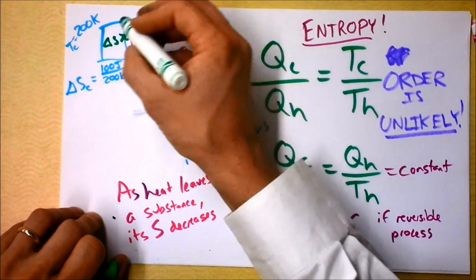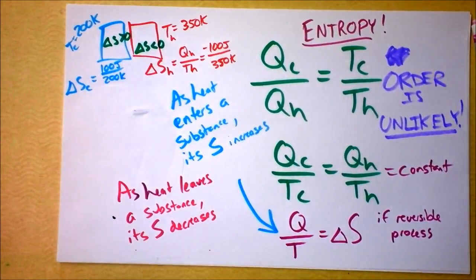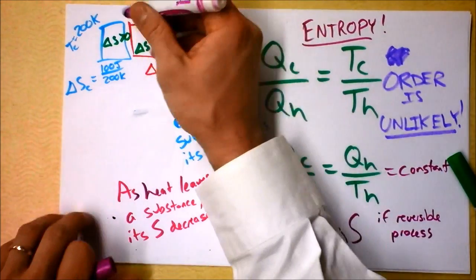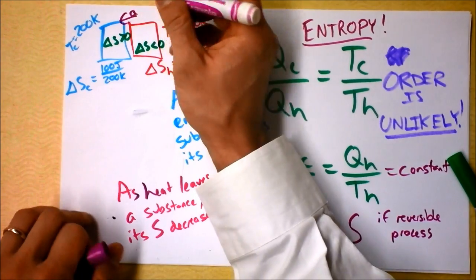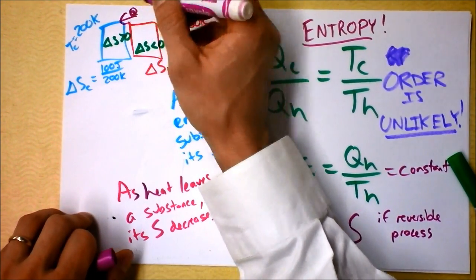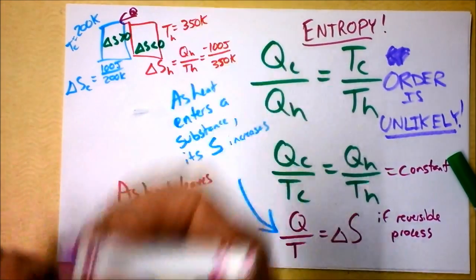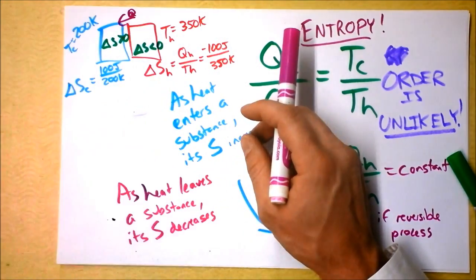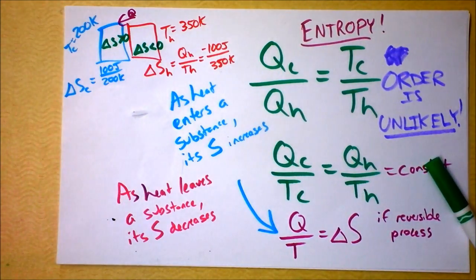S is decreasing here. S is increasing there because heat is flowing. Well, it will be flowing this direction. Heat flows that direction, so entropy increases for this guy and decreases for that guy, but the increase in entropy over here is greater than the decrease in entropy over there, so the universe as a whole...